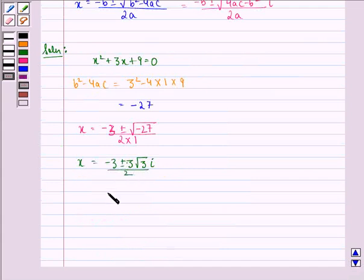Therefore, our solution to this question is minus 3 plus minus 3 root 3i divided by 2.